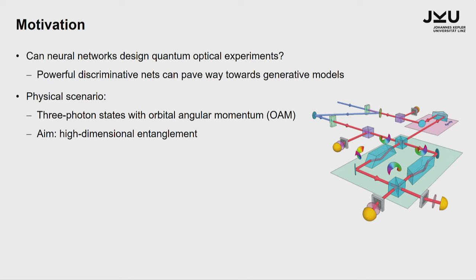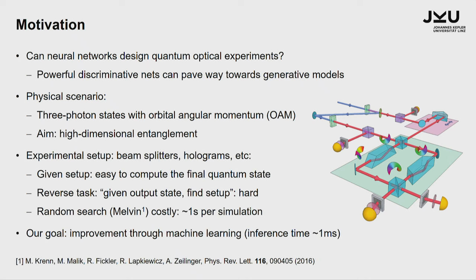The physical scenario we were dealing with: we are interested in three-photon states with orbital angular momentum. Experimentally it's a four-photon state, but one is used as a trigger to know that the other three photons are there. Orbital angular momentum, as probably most of you know, is a degree of freedom of a photon measured in multiples of ℏ, and in principle it can take any integer value. So it's not a qubit like polarization, but the orbital angular momentum is a qudit where d is in principle arbitrarily large. Experimentally d equal to 300 or more has been reached.